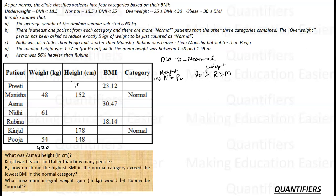Rubina was heavier than Manisha but lighter than Pooja. The median height was 1.57 for Preeti, so 157 cm is the height for Preeti and that is the median height. There are 3 people above and 3 people below.